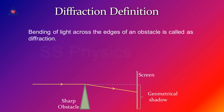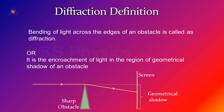The definition is like this. Bending of light across the edges of an obstacle is called diffraction, or it is the encroachment of light in the region of geometrical shadow of an obstacle. As shown in the figure, there is a sharp obstacle and when light is incident, the obstacle will block the light, but at the sharp edges, the light will get diffracted or bent to some extent.